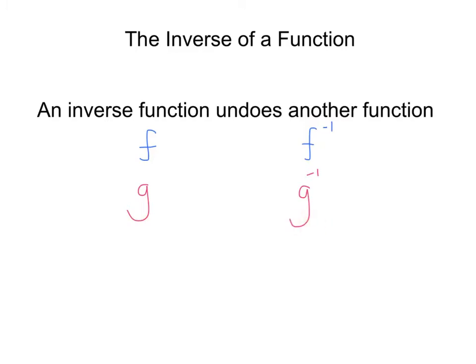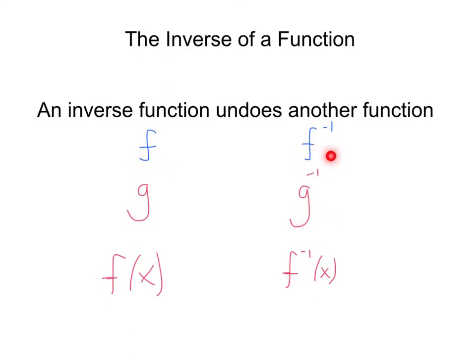Let's say we're talking about the output of a function. So if I had f of x, that would be the output of f. How would we denote the inverse of that? That would be f inverse of x. Don't say something like 'f minus 1 x.' This is f of x, this is f inverse of x, this is g, g inverse, this is f, f inverse.